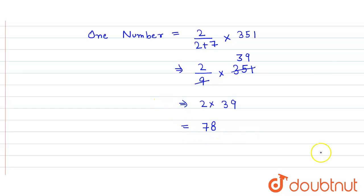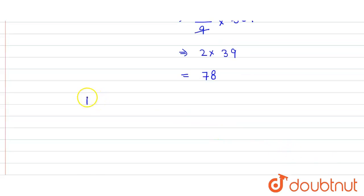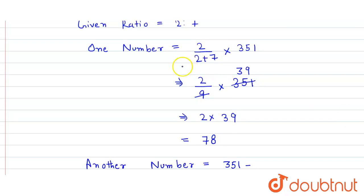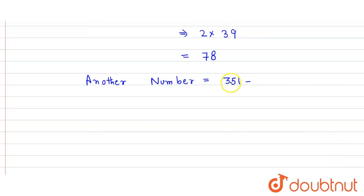So the one number is 78 and another number will be equals to 351 minus the first number which is 78. So it is 351 minus 78. When we subtract it here we get 273. So that's our answer.